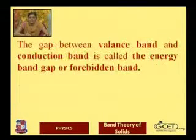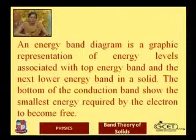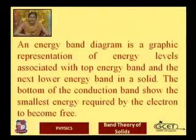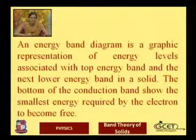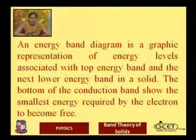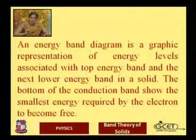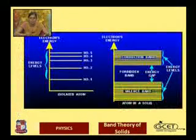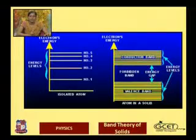The empty band immediately above the valence band is known as the conduction band. The gap between the valence band and conduction band is known as the energy band gap or forbidden band, represented by Eg. This value plays a very important role in the classification of solids. The bottom of the conduction band shows the smallest energy required by an electron to become free and contribute current to an external circuit.